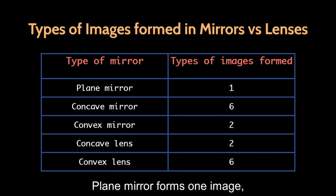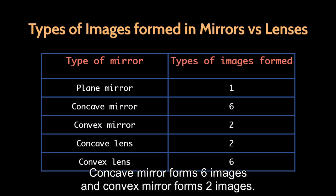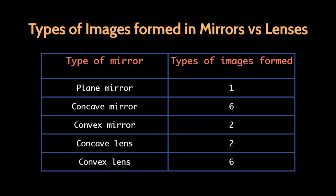Plane mirror forms one image, concave mirror forms six images and convex mirror forms two images, while the vice versa for lenses.